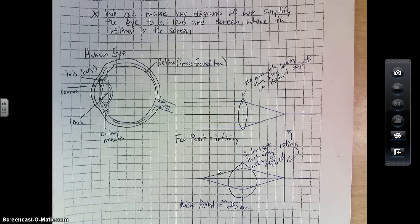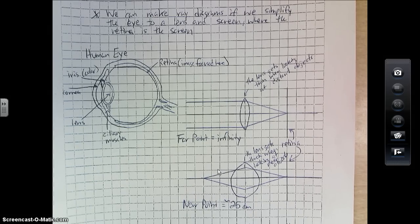But in order to do that, the lens actually has to be in a thicker state, so that it can quickly bend those rays and focus them at your retina.